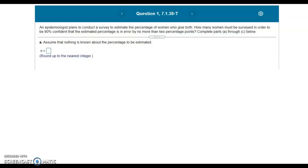An epidemiologist plans to conduct a survey to estimate the percentage of women who give birth. How many women must be surveyed in order to be 90% confident that the estimated percentage is in error by no more than two points? We're completing parts A through C below.